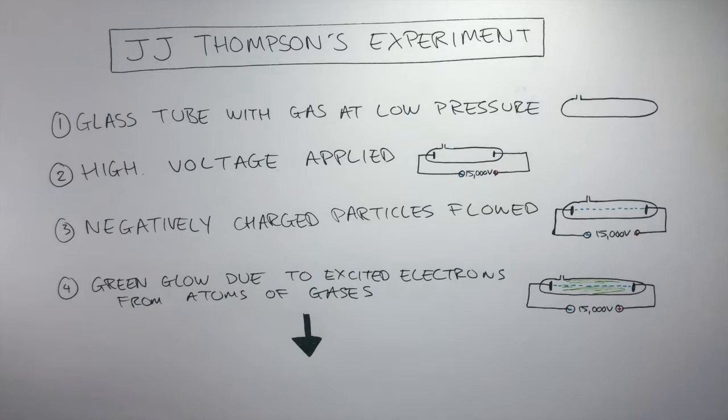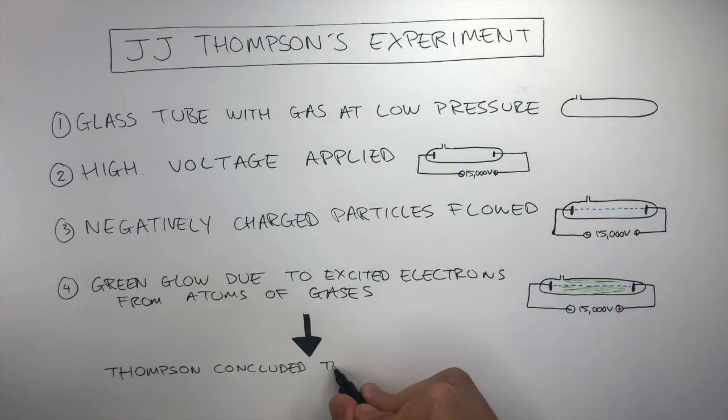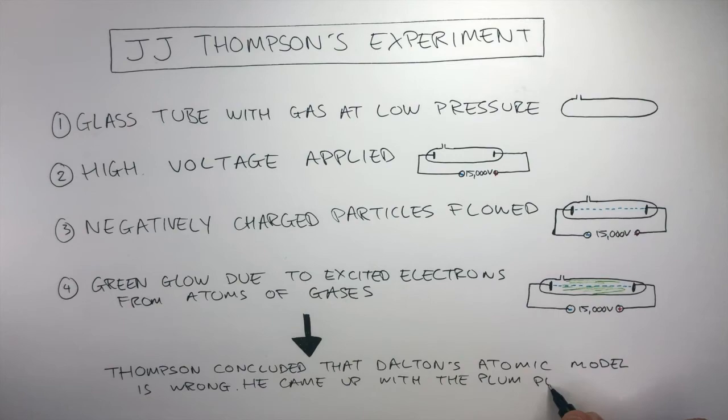This experiment was very important when it comes to the history of the development of the atom. This is because Thompson concluded Dalton's atomic model was wrong. He came up with a plum pudding model instead, which was an improved model of the atom at the time with the best scientific knowledge they could possibly have.